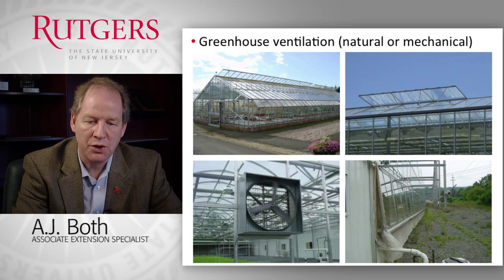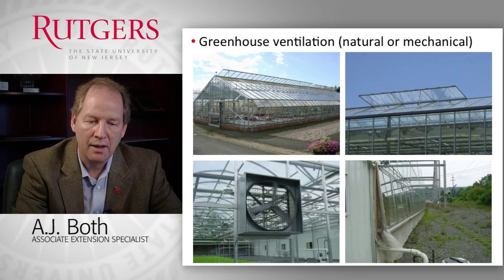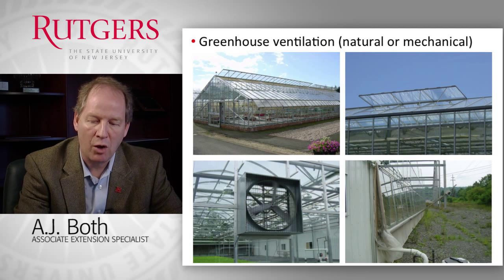The bottom two pictures show a mechanical ventilation system with, on the left-hand side in one end wall, a row of fans driven by an electric motor. And on the opposing sidewall, we have a large window that opens up to allow air to enter the greenhouse when the fans are operating.